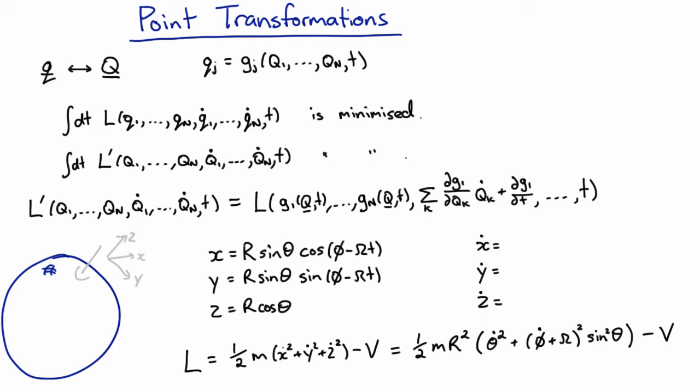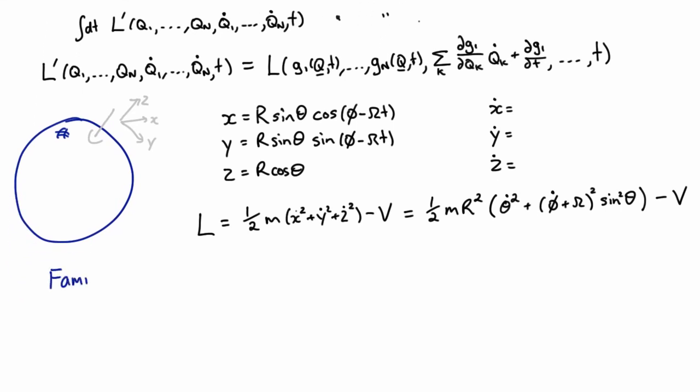Now one of the really important things to talk about when we're talking about transformations between coordinate systems is the possibility of smooth transformations between coordinate systems, which means we need to introduce the idea of families of point transformations. By which I mean...